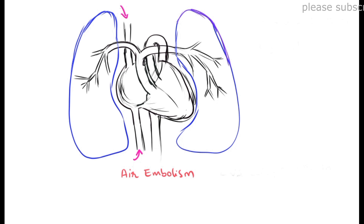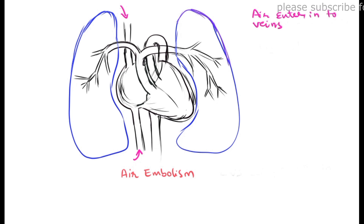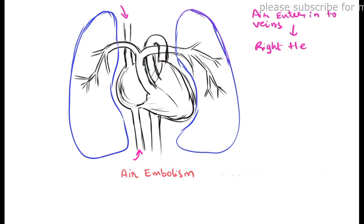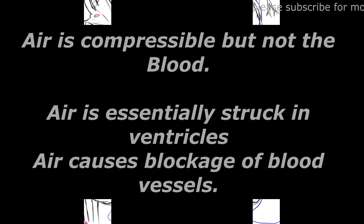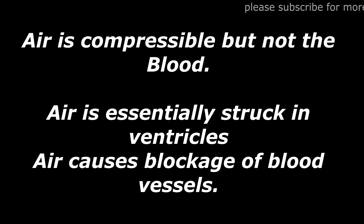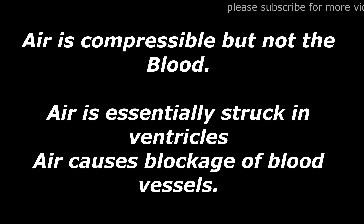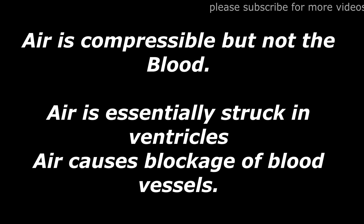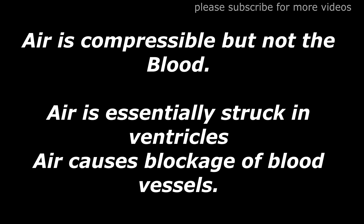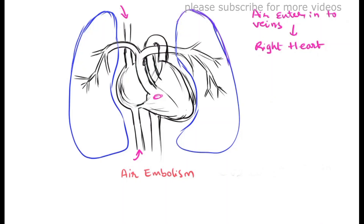Air may enter into the circulatory system mainly via the veins. Once air enters the venous circulatory system, it travels and gets stuck in the right heart, particularly in the right ventricle, because air is compressible but blood is not. Some amount of air may escape from the ventricle and enter the circulatory system, causing blockage of blood vessels, mainly micro blood vessels in the cerebral circulation and other parts of the body.